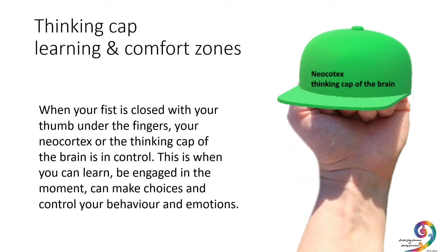When your fist is closed with your thumb under the fingers, your neocortex or the thinking cap of the brain is in control. This is when you can learn, when you can be engaged in the moment, when you can make choices, and when you control your behaviour and emotions. It's sometimes known as the learning zone or the comfort zone.